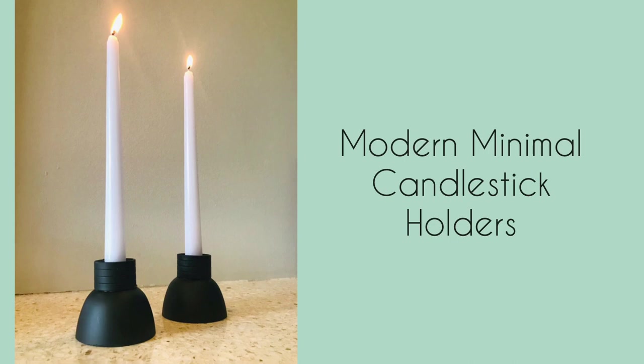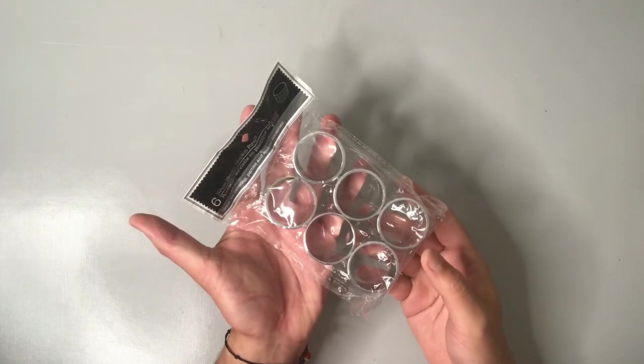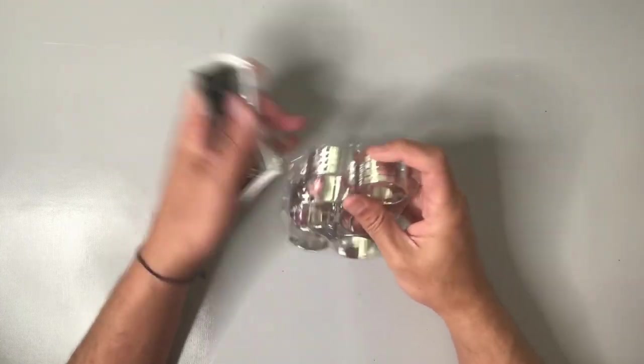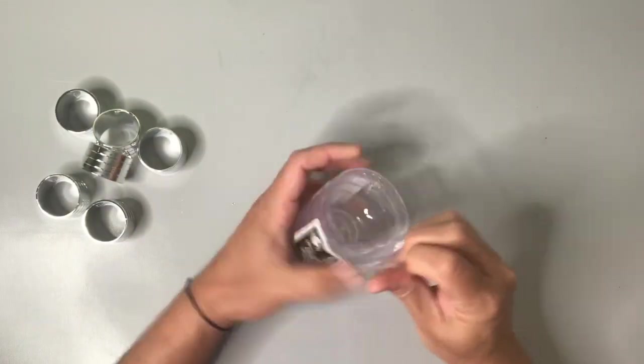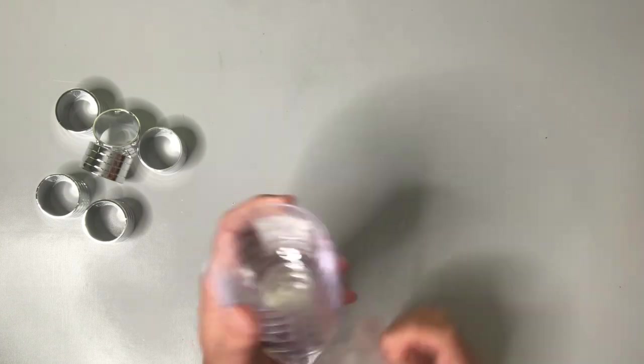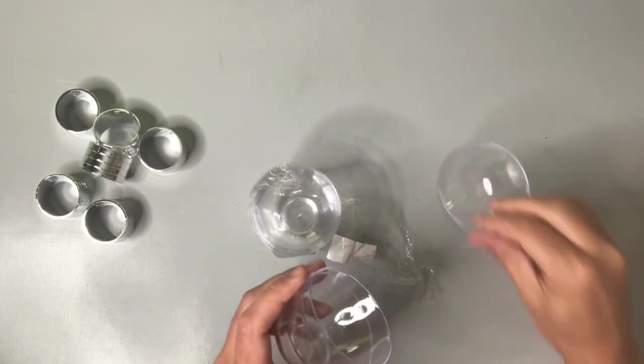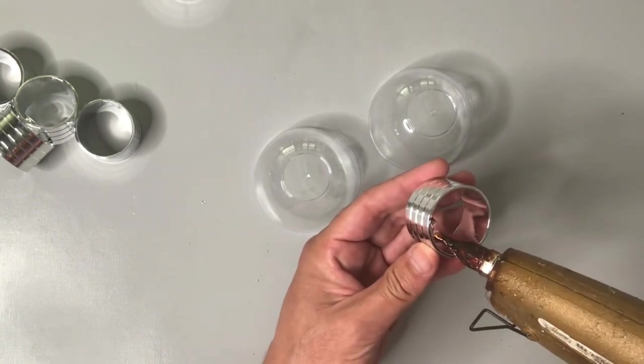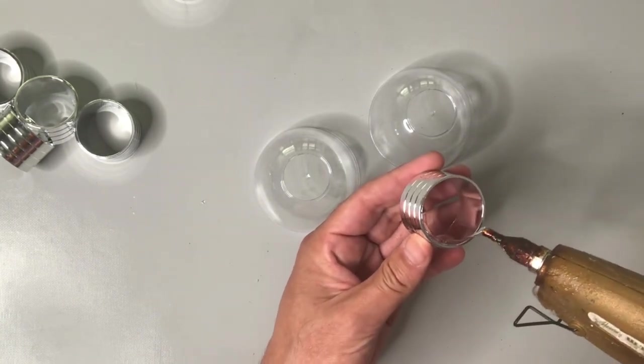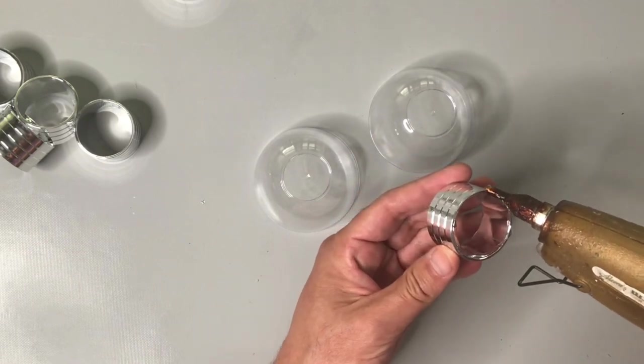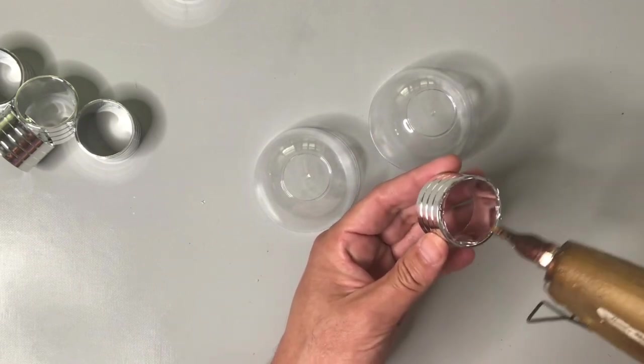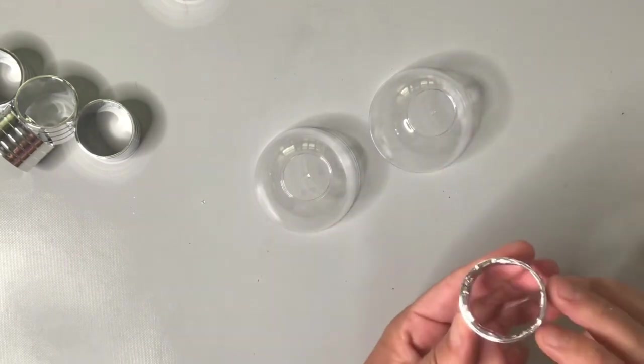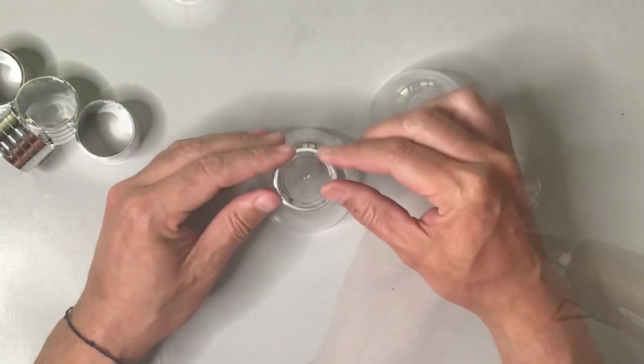Check out how sleek, elegant, and simple these modern minimal candlestick holders are. And you may not believe what I'm going to use to create these. It starts off with these Dollar Tree napkin holders. They're made out of plastic, but they have that sort of chromey finish. And these small plastic bowls that come in a pack from Dollar Tree as well. I'm simply going to use a hot glue gun to run a thin line of hot glue on the bottom of one of the napkin holders. And then we're going to attach those napkin holders directly to the bottom of those little plastic bowls.